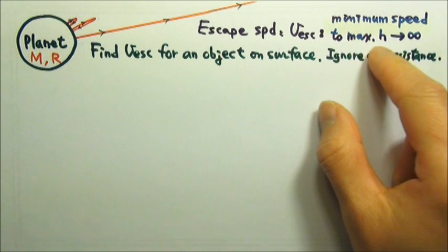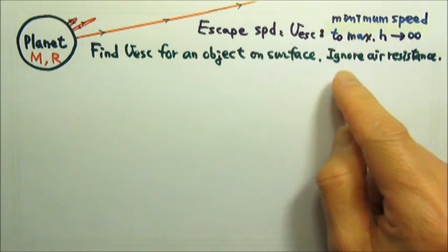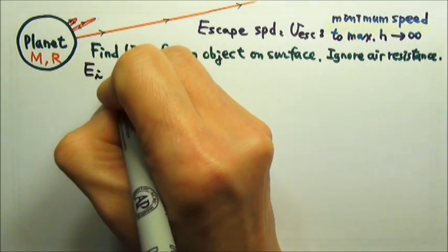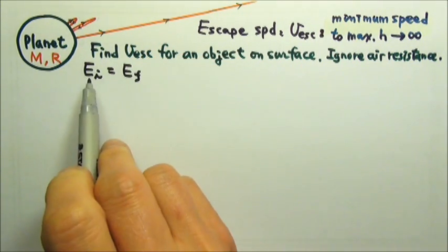It is basically a maximum height problem, so we can use conservation of energy. Because we ignore air resistance, that means that the total mechanical energy is the same at the beginning and the end.